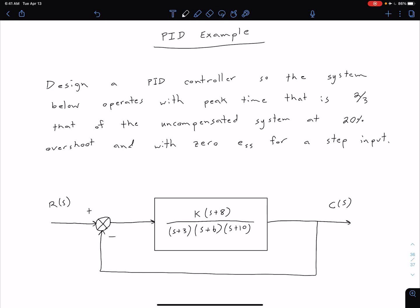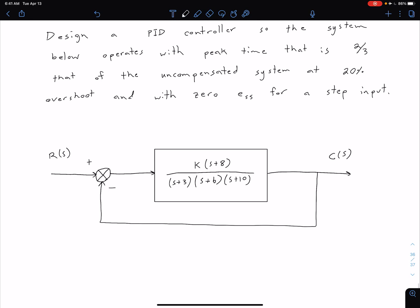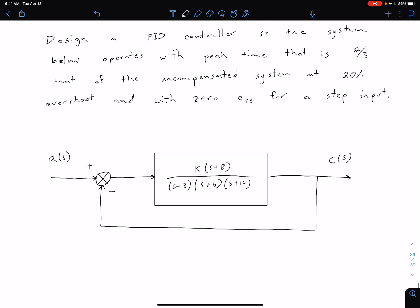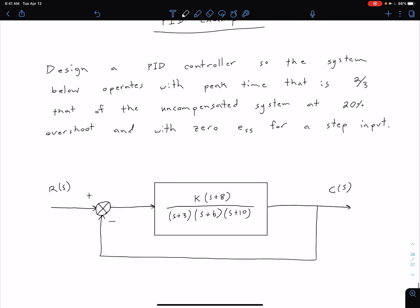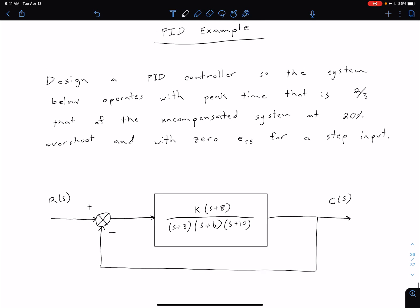We're now ready to look at a full PID example. Because this process is a bit long, we're gonna split the example up into a few different smaller videos. In this example, we want to design a PID controller so that this system below, given by the block diagram here, operates with a peak time that is two-thirds that of the uncompensated system at 20% overshoot and with zero steady-state error for a step input.